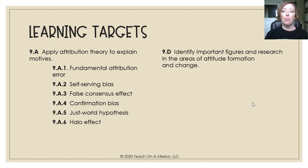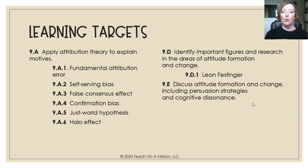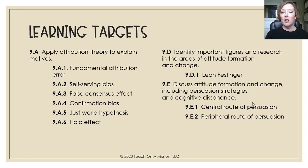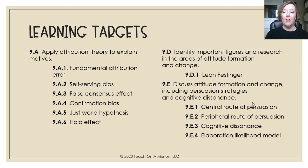You should also be able to identify important figures and research in the areas of attitude formation and change — including Leon Festinger, Philip Zimbardo, and Stanley Milgram, to name just a few. You should also be able to discuss attitude formation and change, including persuasion strategies and cognitive dissonance, the central route of persuasion, the peripheral route of persuasion, and the elaboration likelihood model.